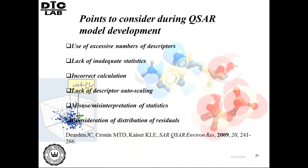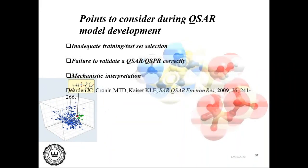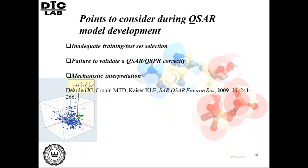Misuse or misinterpretation of statistics should be avoided, since QSAR models are often generated by non-mathematicians. Distribution of residuals is a very important diagnostic for the model. Inadequate training-test selection should be avoided — using very few compounds in the test set, such as only five while the rest are in training, is not desired; sufficient test set compounds are needed to judge model predictability. Failure to validate a QSAR correctly and lack of mechanistic interpretation should also be avoided.